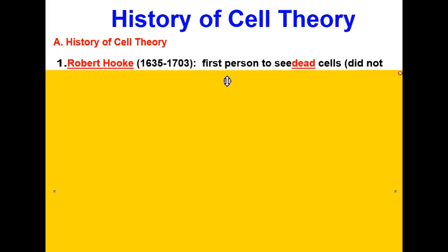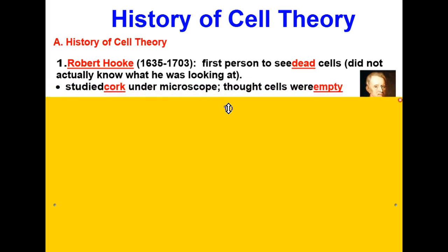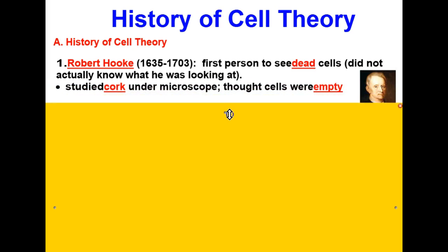The first scientist that contributed to what became known as cell theory was Robert Hooke. He did his work between 1635 and 1703, and he was the first person to see dead cells. He did not actually know what he was looking at — he was studying cork under the microscope and he thought cells were empty.